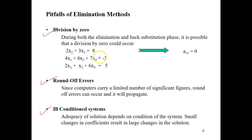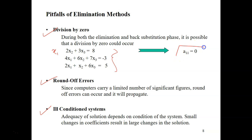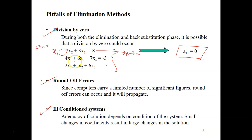The first pitfall is division by zero. Let's say you have a set of equations and the first row doesn't have any x1. During normalization, you will face a division by zero because the A11 pivot element equals zero. A11 is what we call the pivot element of the pivotal row.